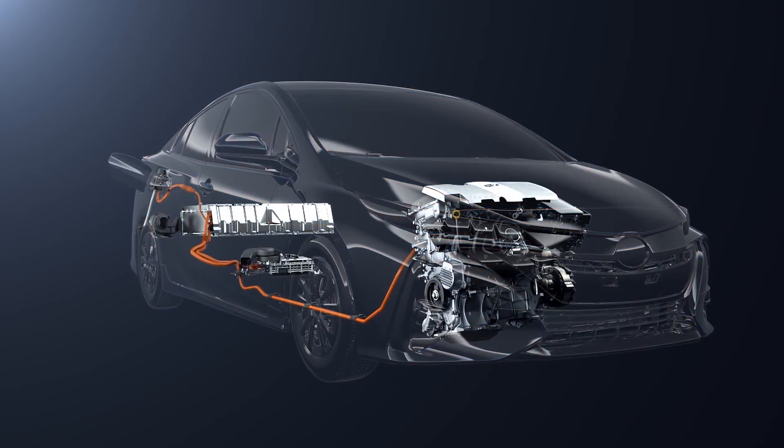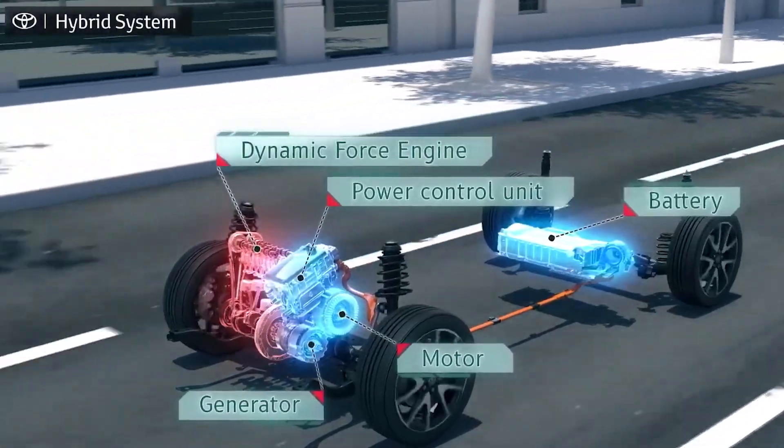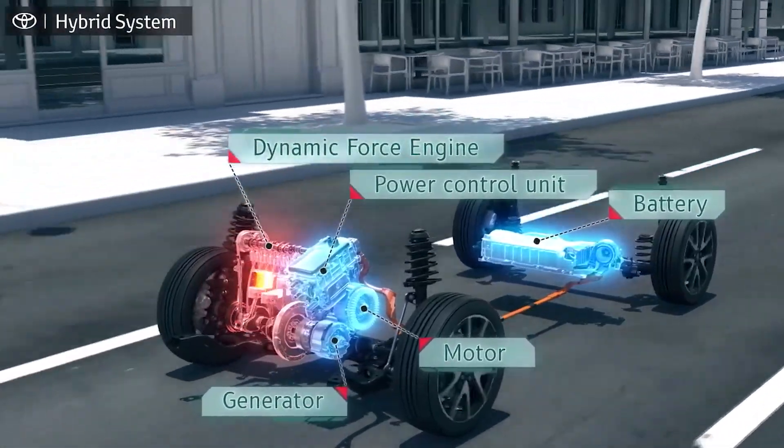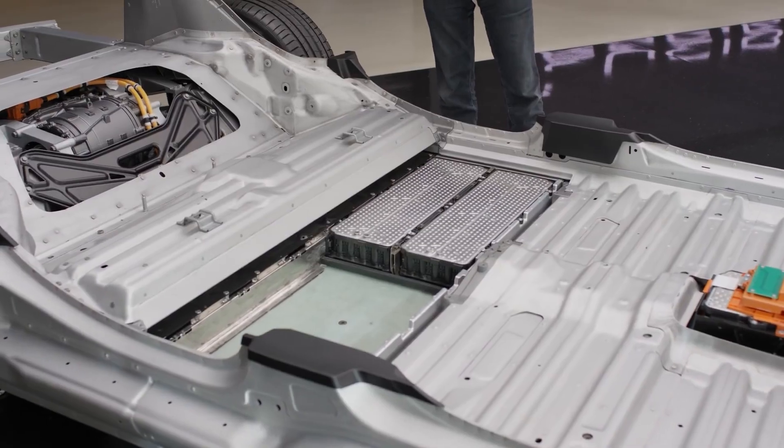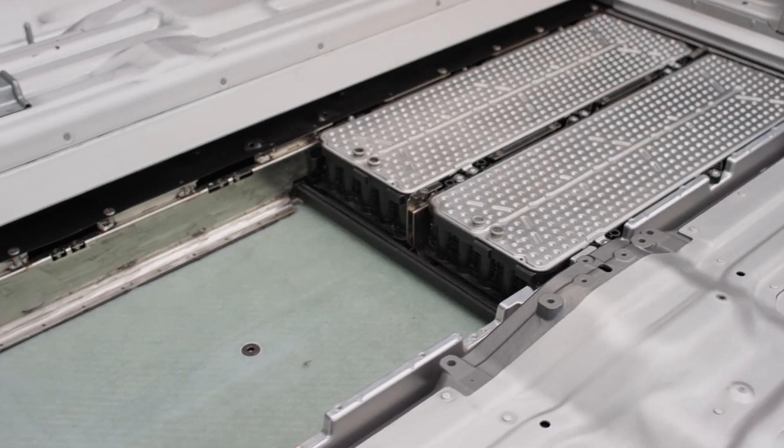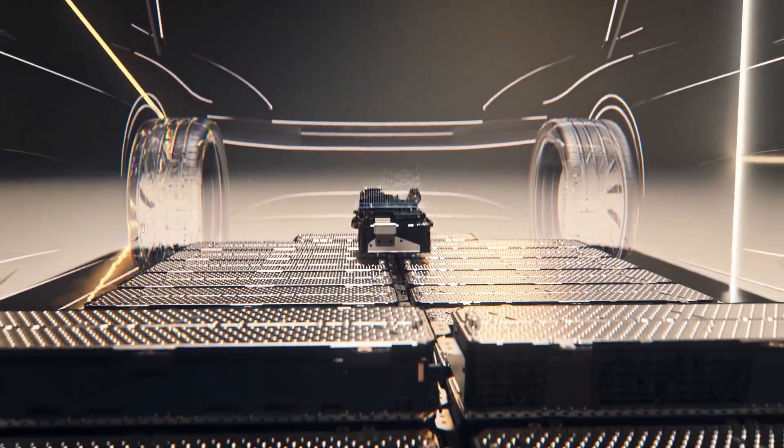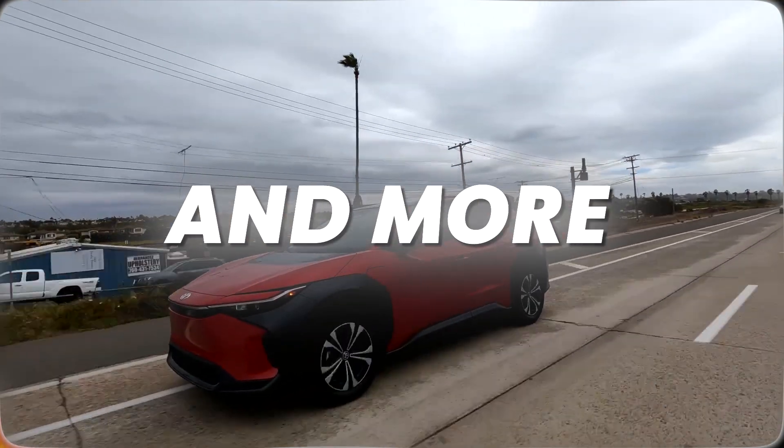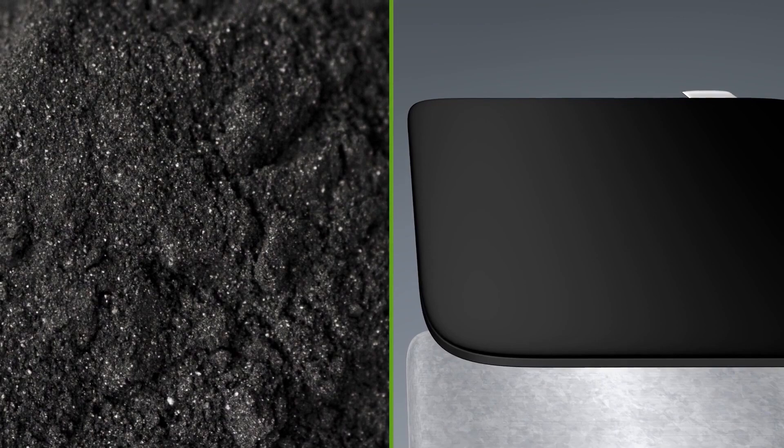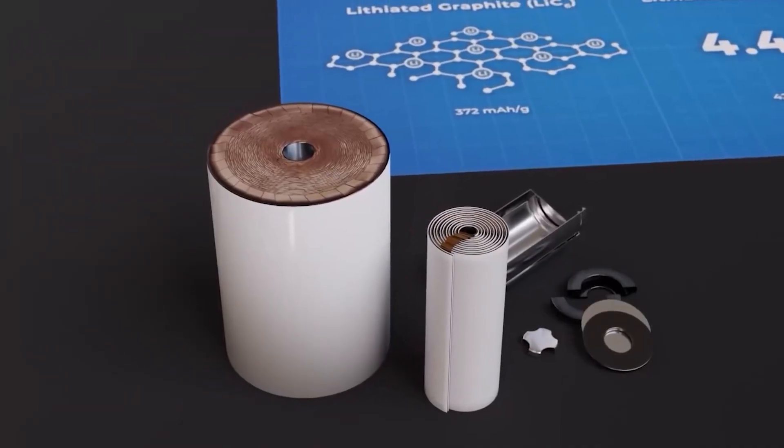Initially, Toyota had plans to introduce these remarkable batteries in hybrid vehicles, where the traditional fuel engine could act as a safety net in case of battery issues. However, their confidence in this new technology has grown so much that they're focusing on putting these cutting-edge solid-state cells directly into battery-electric vehicles right from the start. This decision represents a giant leap forward in the world of electric mobility, offering cleaner, greener, and more efficient journeys on the horizon. Keep your eyes peeled for the incredible changes coming our way, all thanks to Toyota's solid-state breakthrough.